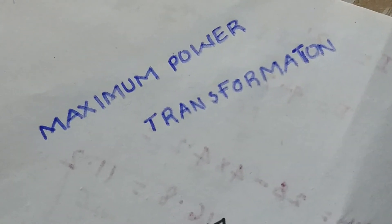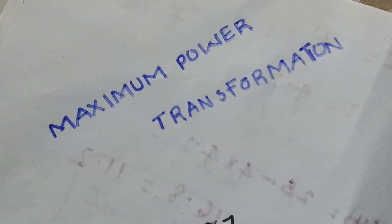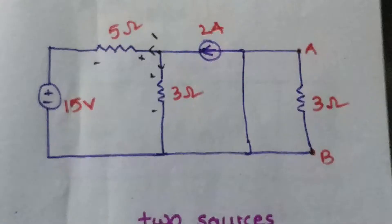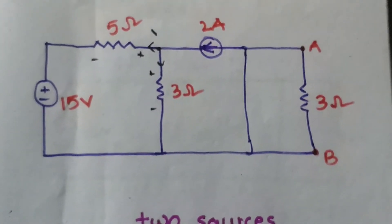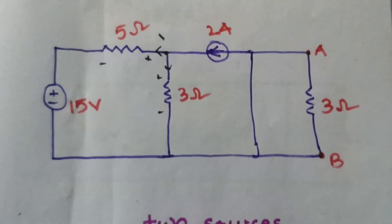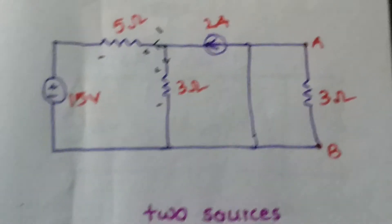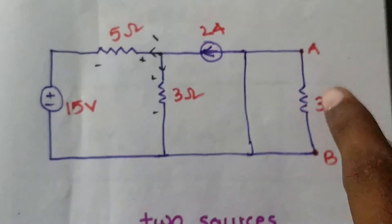Hello guys, welcome to our channel Smoke Official. Today our topic is about Maximum Power Transformation. This is the circuit we want to solve. We want to find the maximum power using this circuit, so here the RL value is 3 ohms.